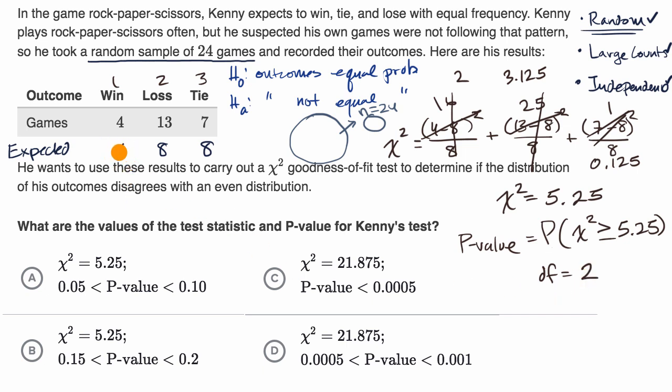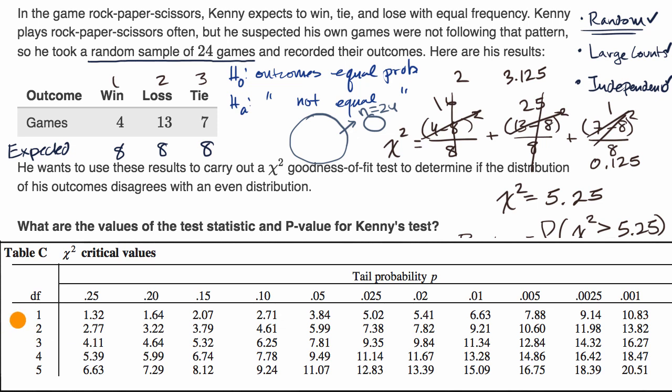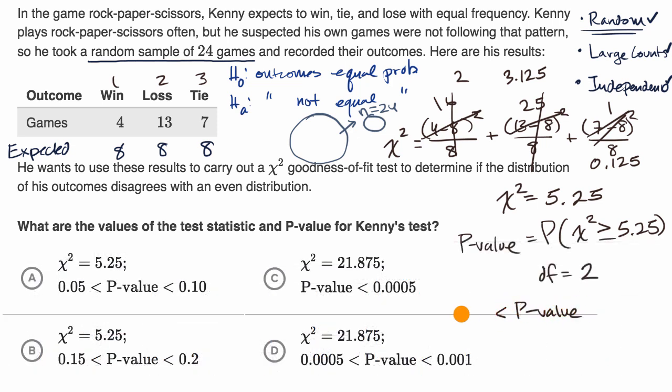And that makes sense, because you know, for a certain number of games, if you know the number of wins, and you know the certain number of losses, you can figure out the number of ties. Or if you know any two of these categories, you can always figure out the third. So that's why you have two degrees of freedom. And so let's get out our chi-squared table. So we have two degrees of freedom. So we are in this row. And where is 5.25? So 5.25 is right over there. And so our probability is going to be between 0.10 and 0.05. So our p-value is going to be greater than 0.05 and less than 0.10.